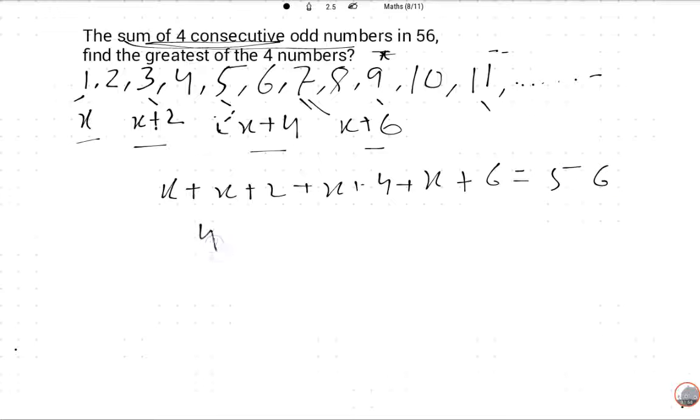Okay, so it will be 4x plus 12 is equal to 56. So you can take common, but I will not, it's up to you. 56 minus 12, 4x is equal to 44.